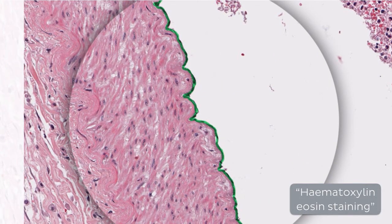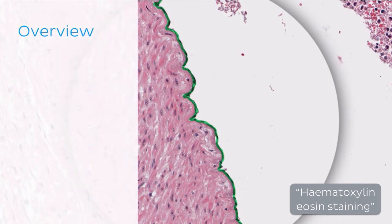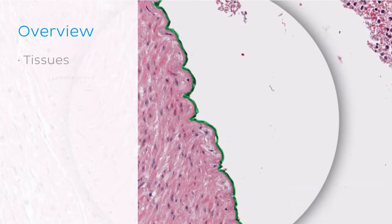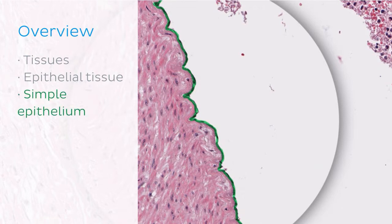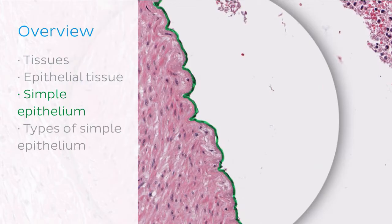Before we dive in let me first give you a quick overview of what we're going to talk about today. We're going to work in a fashion that starts very broad and general, then get more and more specific as the tutorial moves forward. So first we'll look at the tissues of the body, then we'll move on to define epithelial tissue. After that we'll focus specifically on simple epithelium, exploring different types of simple epithelium and where it's found in the body. We'll then round off with some clinical notes relevant to the topic.